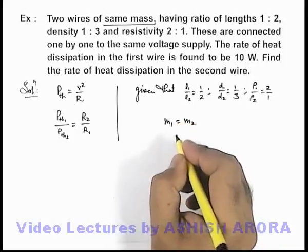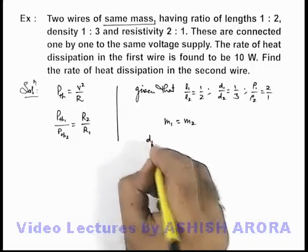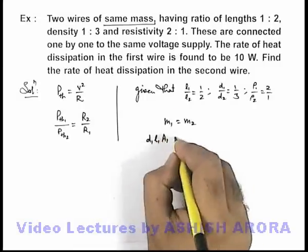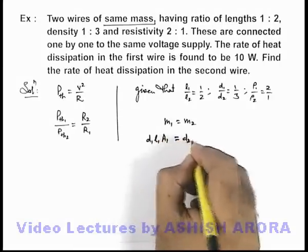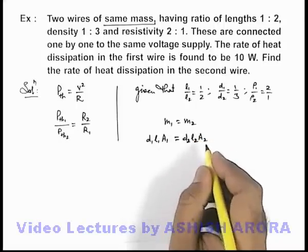Mass can be written as density multiplied by volume, so it can be written as d1·L1·A1, if A1 is the cross sectional area of first wire. This must be equal to d2·L2·A2, if A2 is the cross sectional area of the second wire.